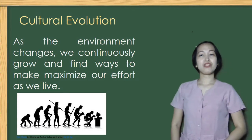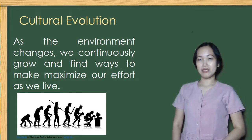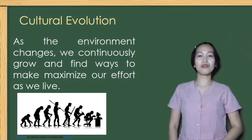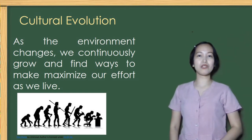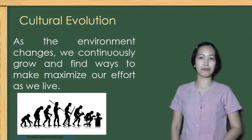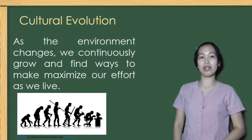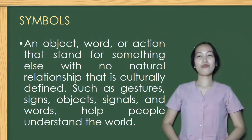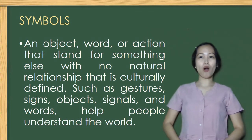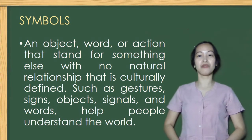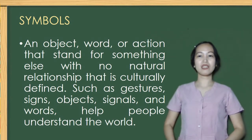Our pre-activity is about the different tools and their practices in early societies. As the environment changes, we continuously grow and find ways to maximize our effort as we live. It is very evident in the different stages of human cultural evolution. Let us define first symbols. A symbol is an object, word, or action that stands for something else with no natural relationship — it is culturally defined — such as gestures, signs, objects, signals, and words that help people understand the world.